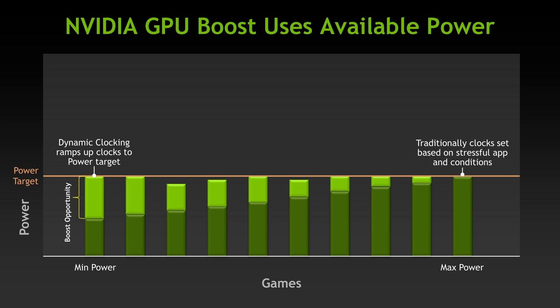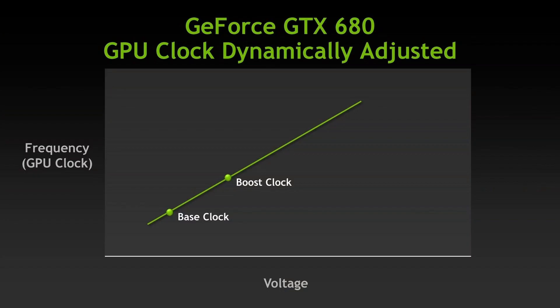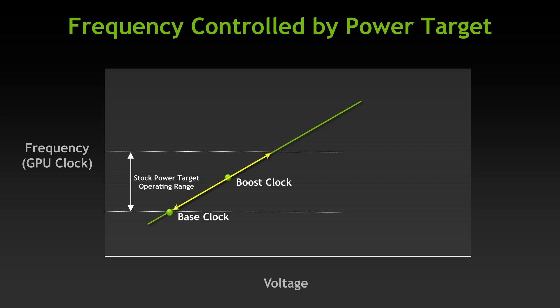With Kepler and GPU Boost 1.0, Nvidia also changed how it reports GPU frequencies to the customer. Instead of having a single fixed clock frequency for 3D applications, with GPU Boost 1.0 we have two different clock speeds: the base clock frequency and the boost clock frequency. The base clock frequency is the guaranteed minimum GPU frequency during full load workloads. The boost clock is a typical clock level achieved running a typical game in a typical environment. Every GPU comes with a factory-fused voltage-frequency curve with 12.5mV and 13MHz granularity. This curve defines the relationship between operating voltage and operating frequency. Depending on the power headroom, the GPU Boost algorithm will select the appropriate point on the voltage-frequency curve.